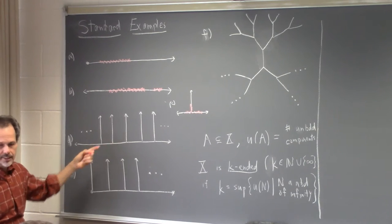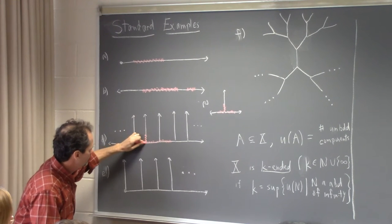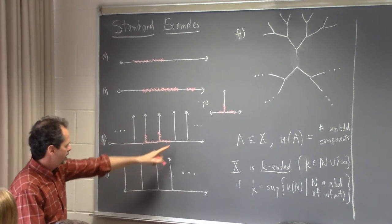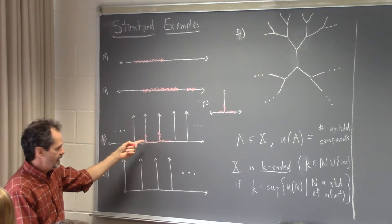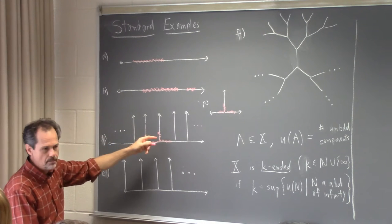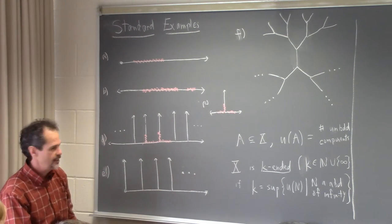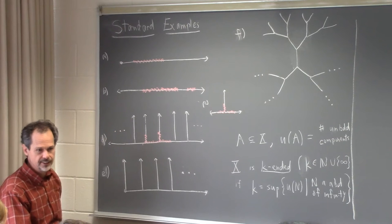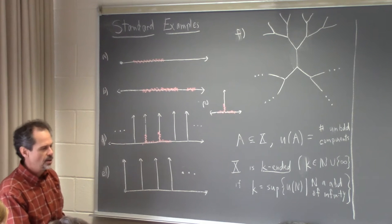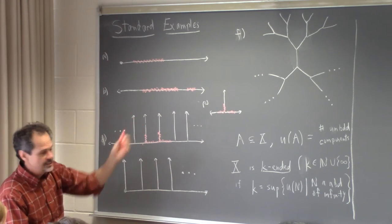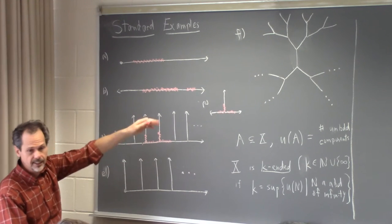These examples are a little bit interesting. For the comb-like space, one compact set gives one, two, three, four unbounded components. You're always going to have finitely many, but the bigger your compact set, the more you pick up. So the supremum ends up being infinity — not surprisingly this is an infinite-ended space. The same holds for the other two infinite-ended examples. One thing I want to do first today is refine what we're doing to distinguish between these infinite-ended spaces.